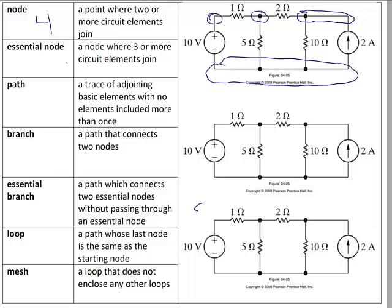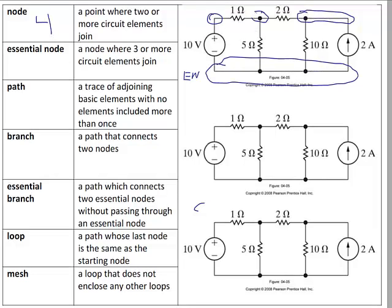An essential node is where three or more circuit elements come together. Looking at our original circuit, the meeting point at the bottom is an essential node. The top-left node is not essential because there are only two elements meeting between the 10 volt and the 1 ohm. However, where the 1 ohm, the 2 ohm, and the 5 ohm come together, that is an essential node. And where the 2 ohm, the 10 ohm, and the 2 amp current source come together, that is an essential node. So this circuit has three essential nodes.